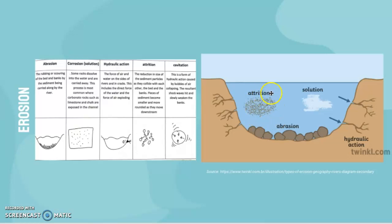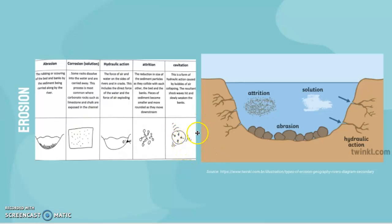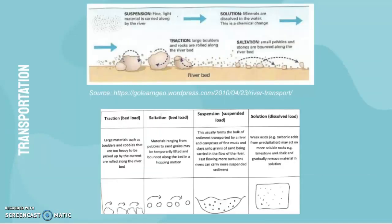Particles become smaller and smaller as they move downstream and collide with each other more. Finally, there's cavitation — this is basically a form of hydraulic action caused by bubbles of air collapsing. When the bubble collapses it releases energy, and the resultant shock waves hit and slowly weaken the banks of the river.